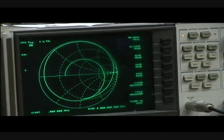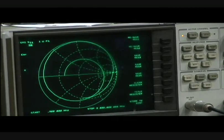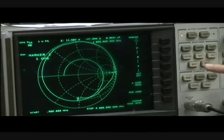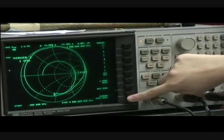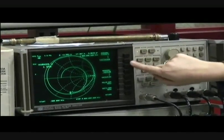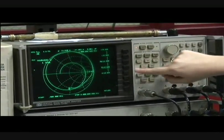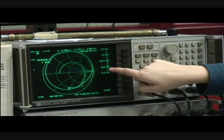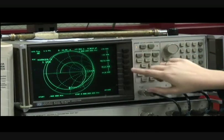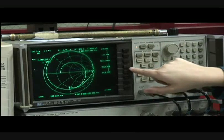And now we want to measure the impedance and the way we do that is we press marker and then marker mode menu and Smith marker menu. And then here we have R plus JX marker so you have the real and imaginary marker impedance.